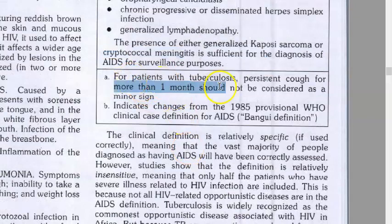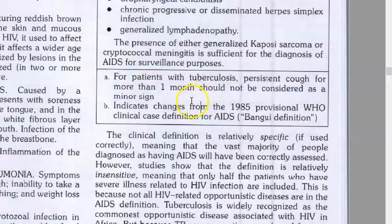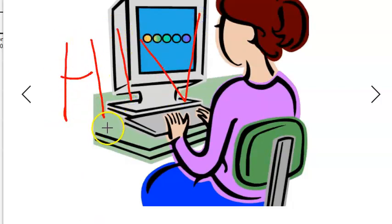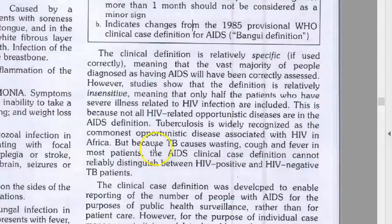For a patient with tuberculosis, persistent cough for more than one month should not be considered a minor sign — that means it's treated as major. Also understand: for knowing if a person is HIV positive or negative you can do a blood test, but how do you know a person has AIDS? That is why they give all these definitions — to tell you that this person has AIDS.